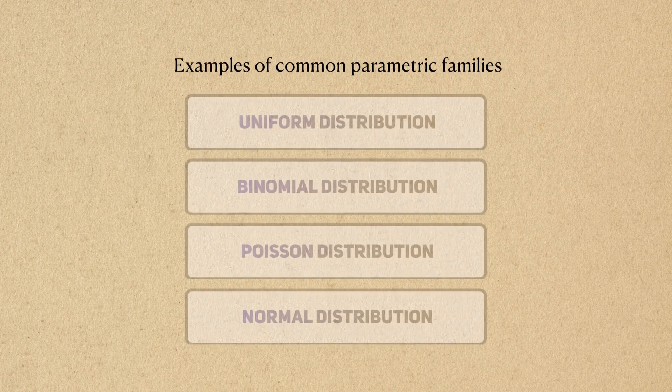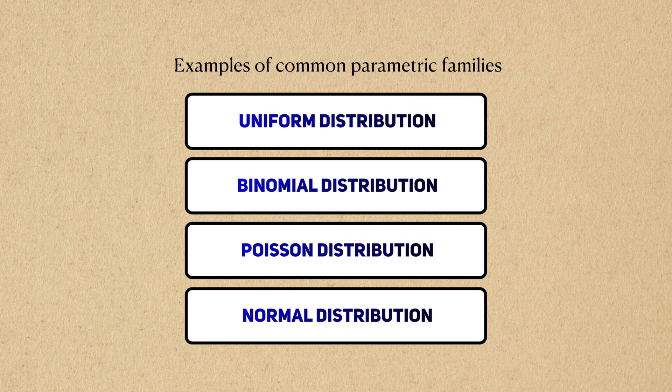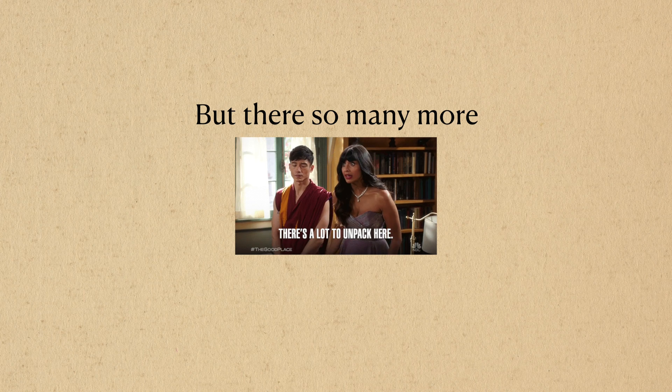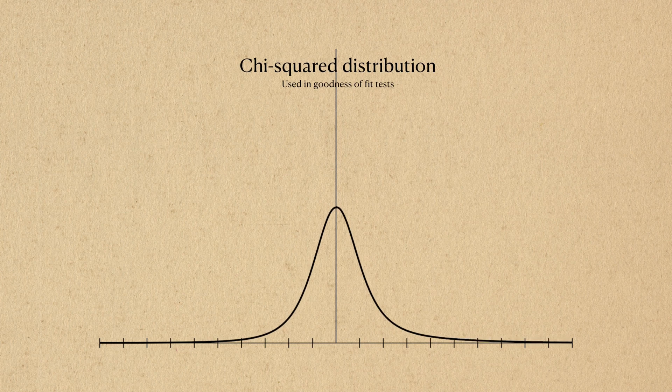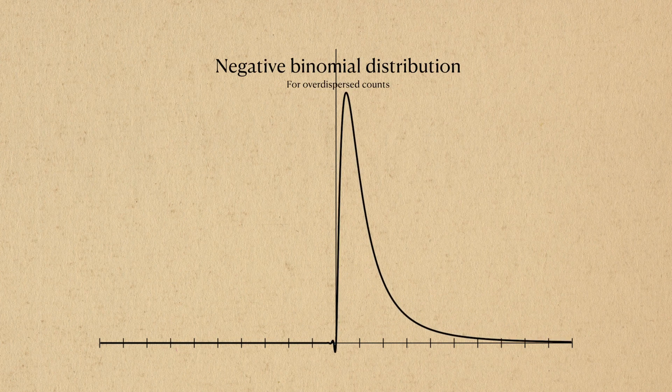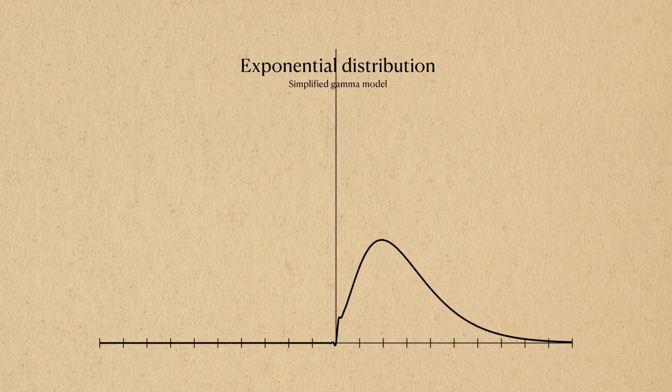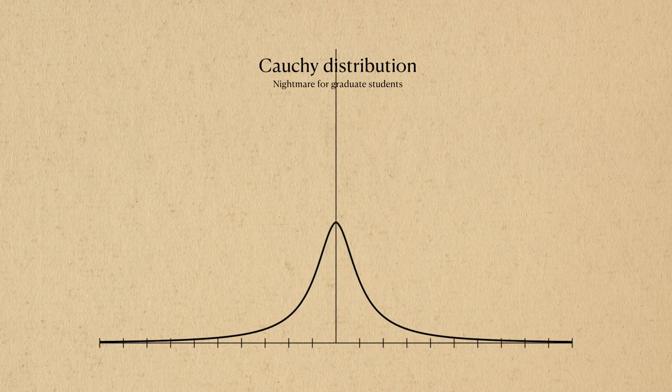These four distributions I mentioned account for the most common data we might encounter in the real world. There are many other parametric distributions, but they have more niche uses. This includes the t-distribution, chi-squared distribution, f-distribution, negative binomial, gamma, exponential, Laplace, Cauchy, and many more.